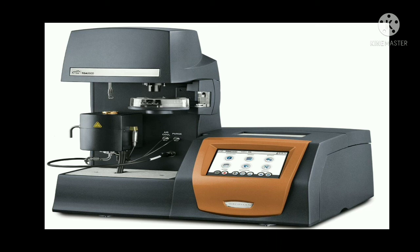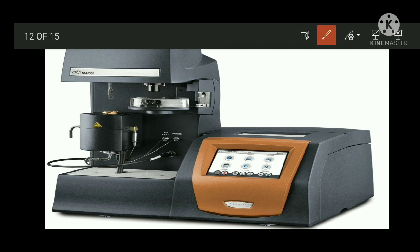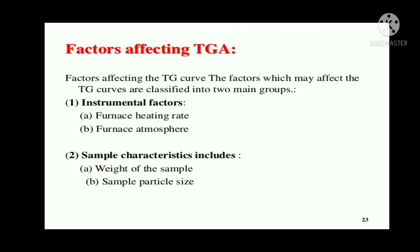This is a typical TGA instrumentation generally used in chemical industries for measuring the change in weight of the sample. Here is the pan over which the sample is placed, the thermocouple which controls the temperature, and the display over which we observe the change in sample properties. There are two kinds of factors which affect TGA: instrumental factors — which include furnace heating rate and atmosphere of the furnace — and sample characteristic factors — which include weight of the sample and sample particle size.